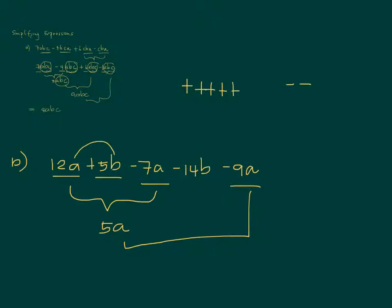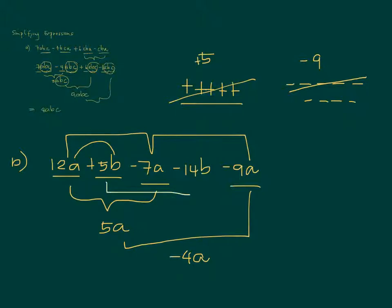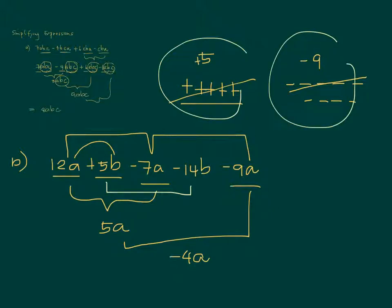I have 5 positives and 9 negatives. Take away 5 negatives from the 9 negatives, so how many negatives do we have left? We have 4 negatives, so negative 4a. You're able to combine all the a's. Now combine the b's: 5b minus 14b. There are 5 positive b's and 14 negative b's, so the result is negative 9b.